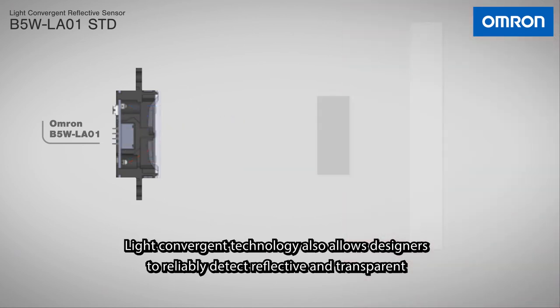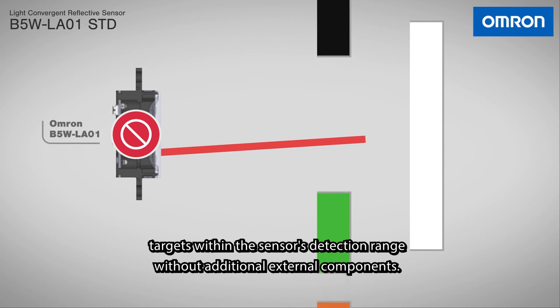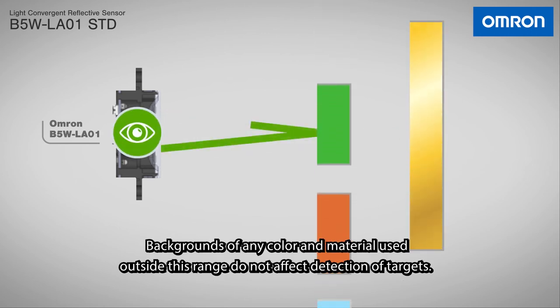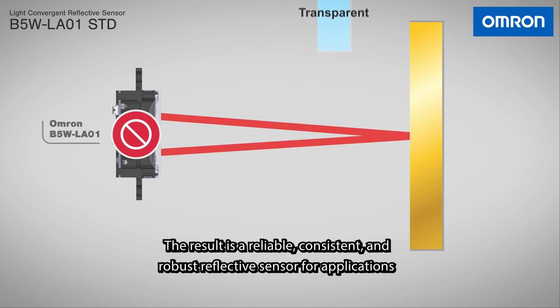Light convergent technology also allows designers to reliably detect reflective and transparent targets within the sensor's detection range without additional external components. Backgrounds of any color and material used outside this range do not affect detection of targets.